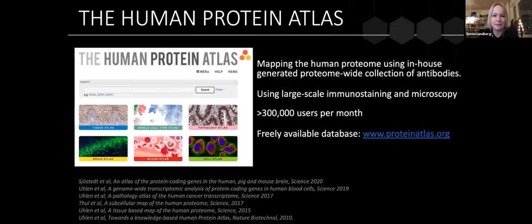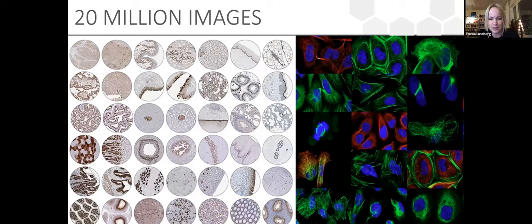Most of my work is closely connected to the Human Protein Atlas project, where we map the human proteome using our in-house generated proteome-wide collection of antibodies. The database has about 300,000 users per month and is freely and openly available. Our raw data are images — about 20 million images in the Protein Atlas — a great starting point for building machine learning models or understanding spatial biology. Today I'll mainly talk about the fluorescent images showing subcellular partitioning of proteins.